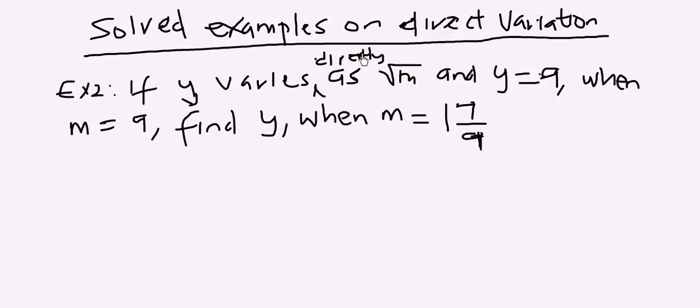So we start by writing our symbols out. y varies directly as the square root of m, so we can have y equals k root m.